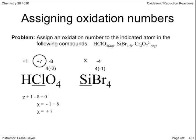Again, assigning X to represent silicon's oxidation number, the sum of X and negative 4 equals the net charge of the silicon tetrabromide molecule, which is 0. So X equals positive 4.